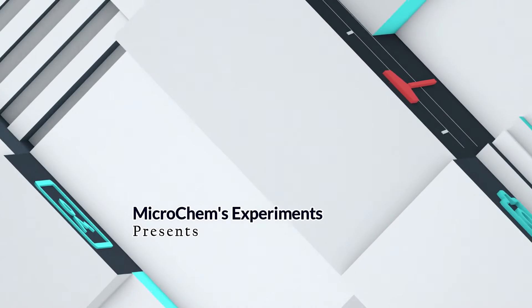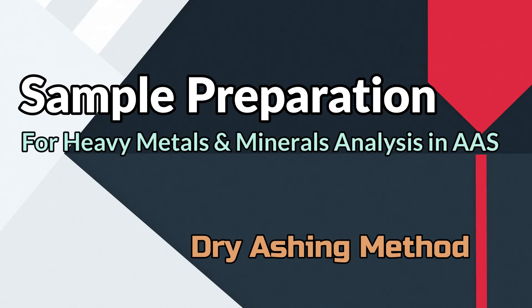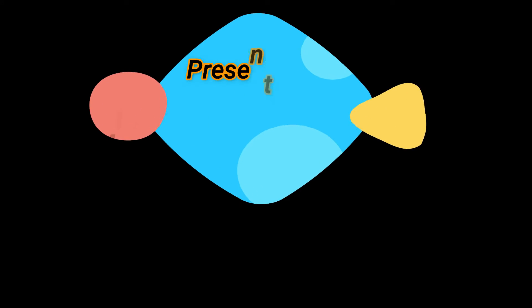Hello viewers, today we will show you the sample preparation procedure which is very crucial to analyze it in atomic absorption spectrometer. Dry ashing is the most common method to prepare samples for heavy metals and minerals analysis.